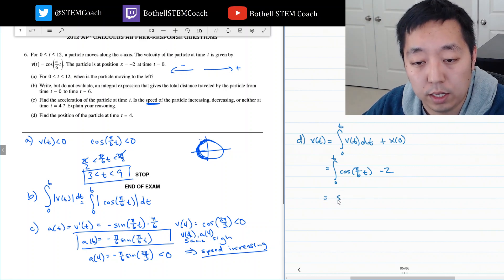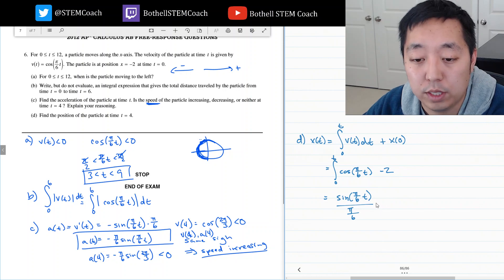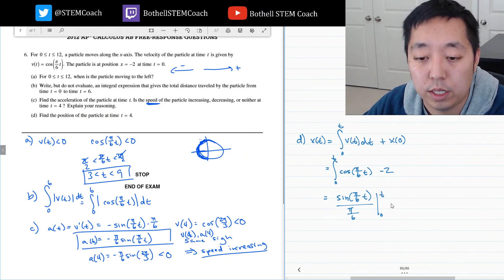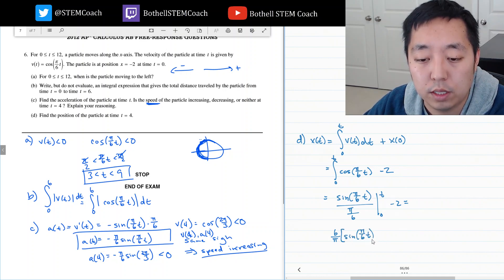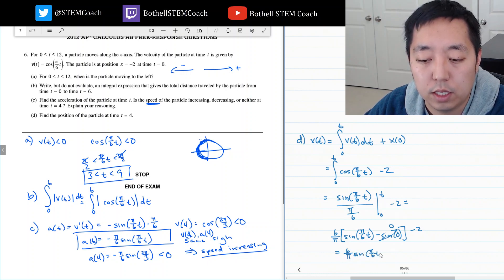The integral of this is sine pi over 6t. But because of this I got to divide by pi over 6. Integrate from 0 to t minus 2. So this becomes 6 over pi sine of pi over 6t minus sin of 0. Sin of 0 is just 0. So the answer is 6 over pi sin pi over 6t minus 2.